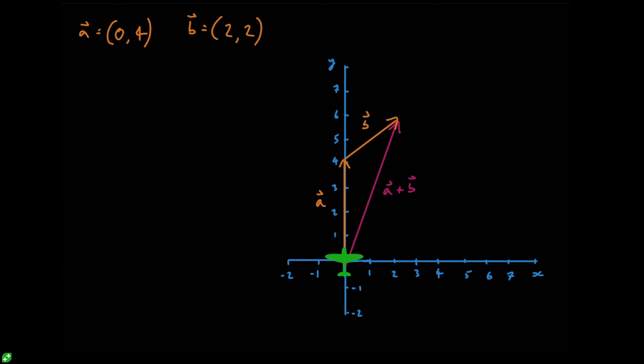So all we need to do is add each individual component together. So our vector a plus vector b is going to equal the first x component plus the second x component, and then the first y component plus the second y component.